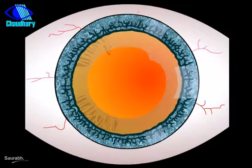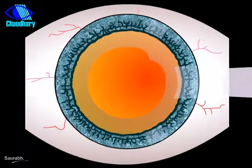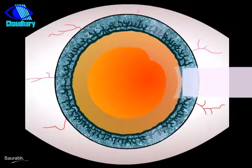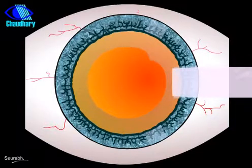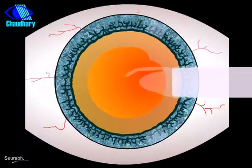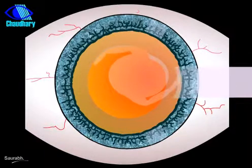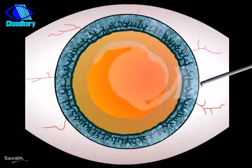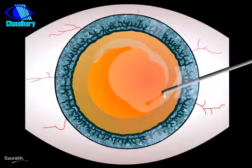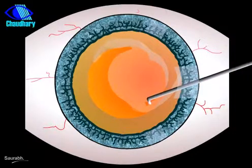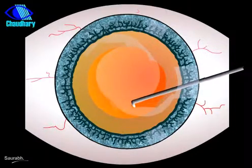A foldable intraocular lens is now inserted with an injection needle through the 2.8mm incision. It opens within the eye and settles down in the position of the natural lens.